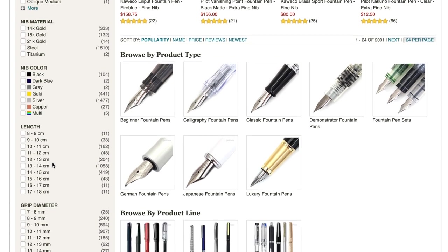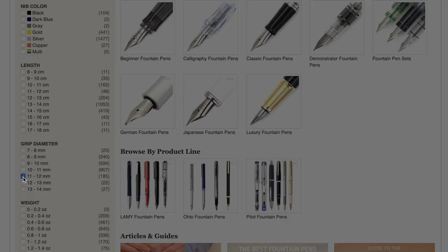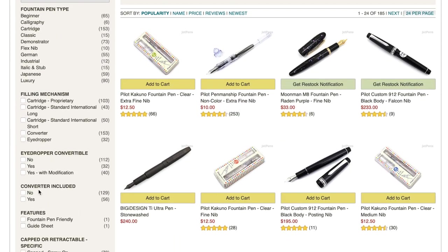However, for me, the more important measurements would be the length and the grip diameter. So assuming I wanted to drill down to pens that I might like, I could choose the grip diameter to start with. And I've noticed that the more you select items down here, at least for this particular website, it gets in a little bit of a confusing situation where you get pens that are not in that range. However, that's another story for another day.